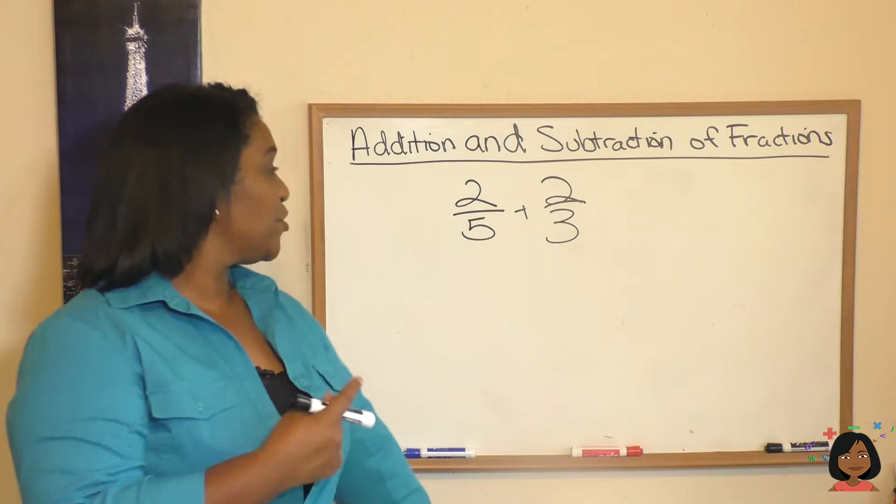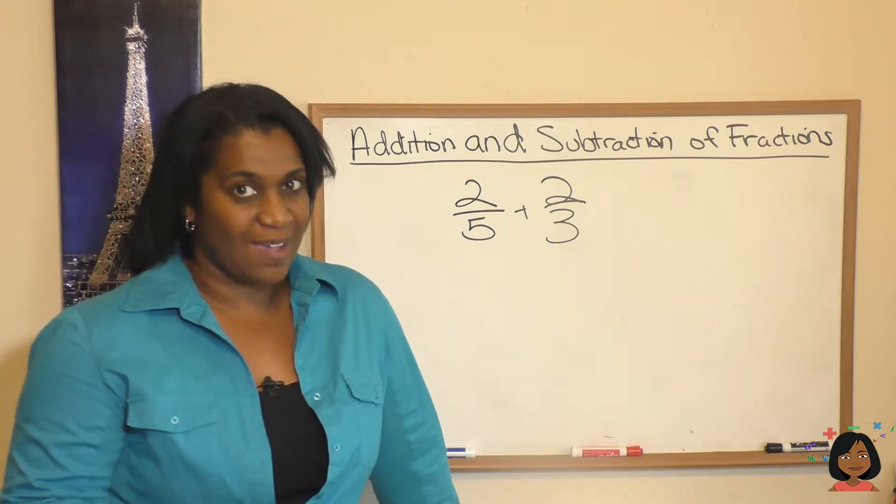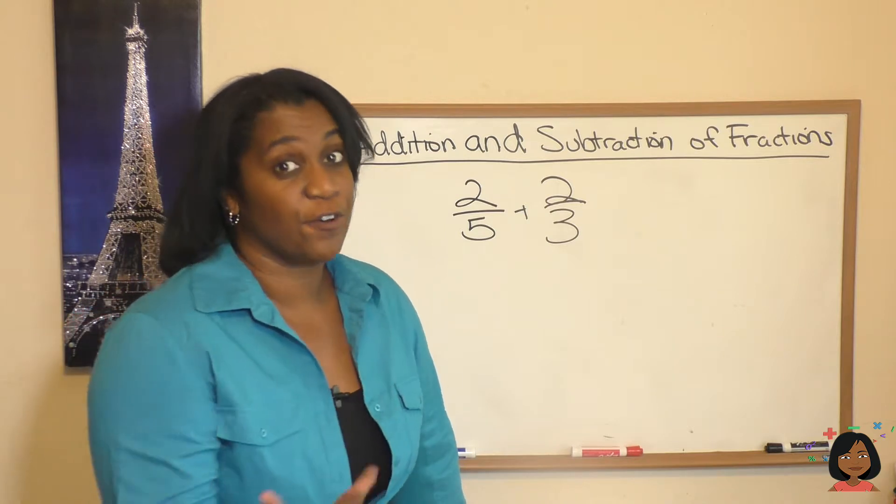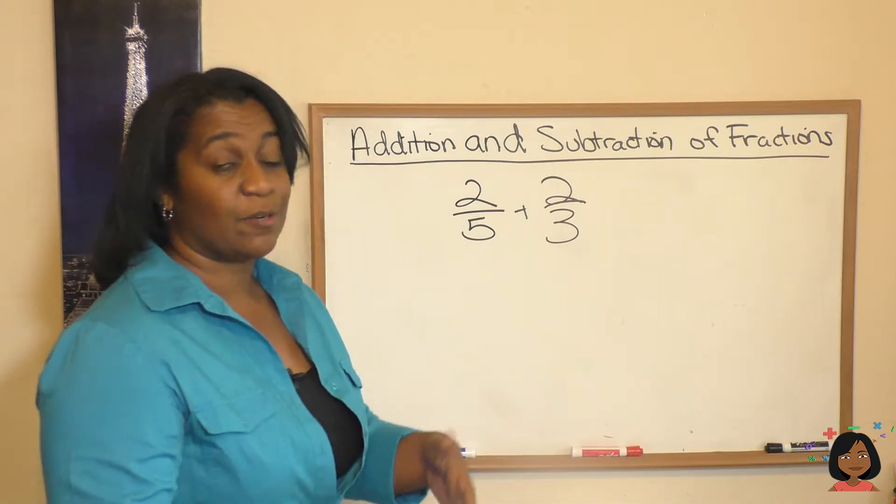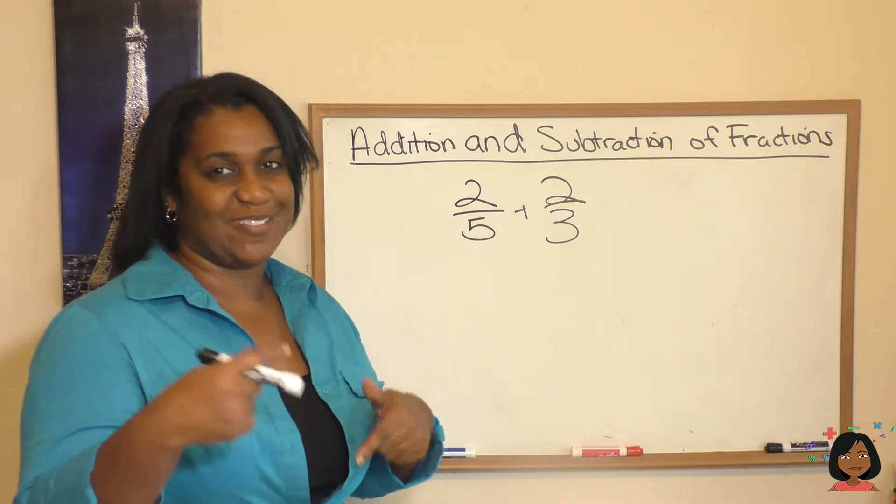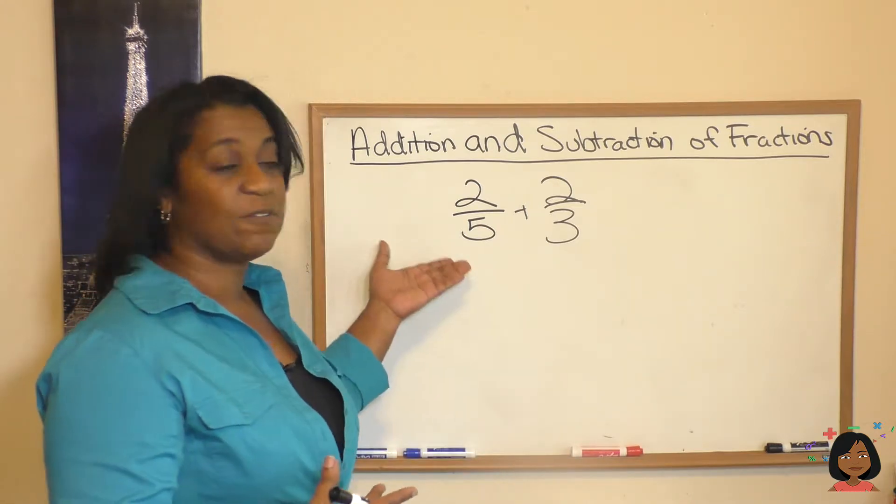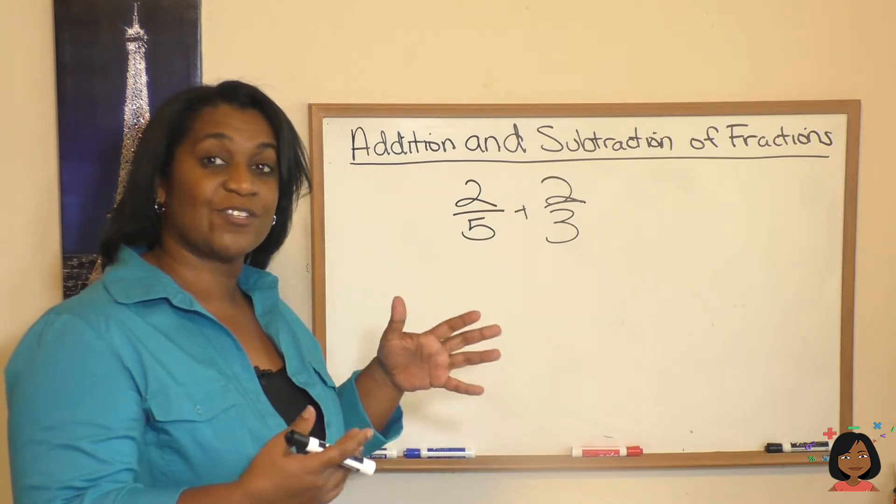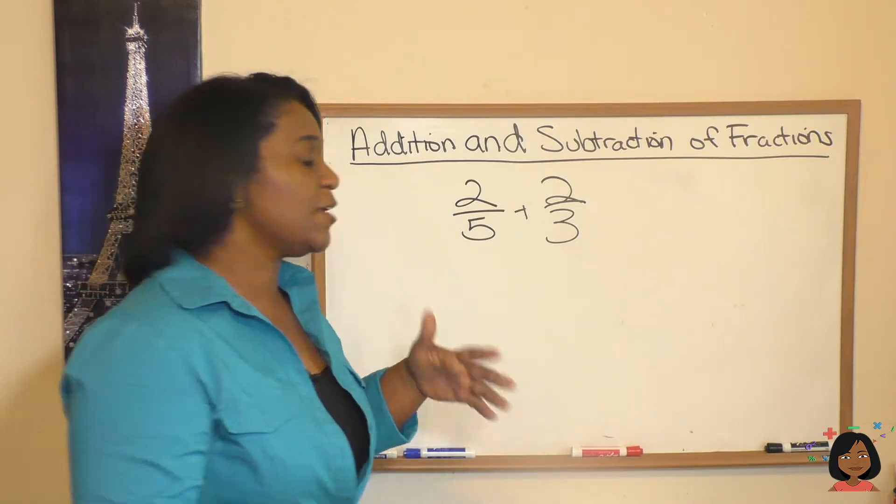Take a look at this example. 2 fifths plus 2 thirds. Do we have the same denominator? No, we do not. So we have to convert them so they have the same denominator. And we do that by finding what? The least common multiple. Yes. What's the least common multiple between 5 and 3? 15.